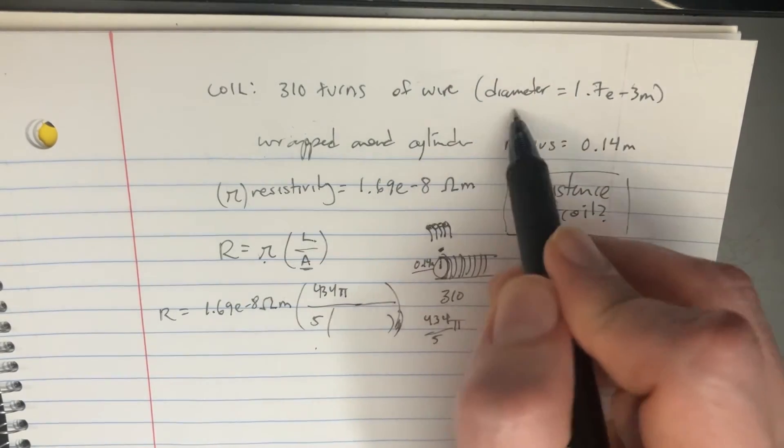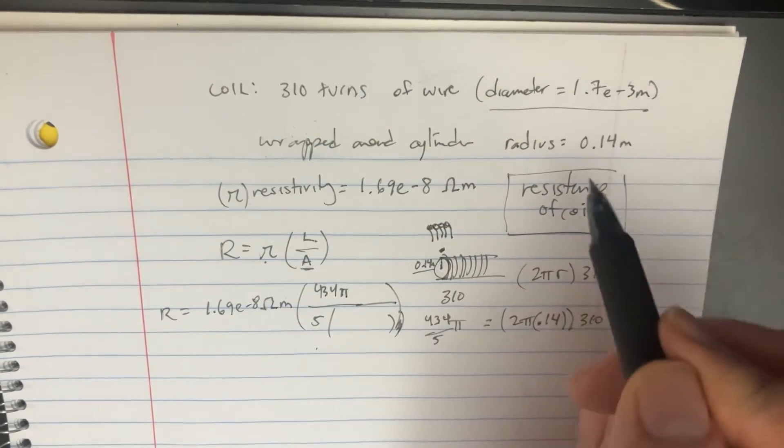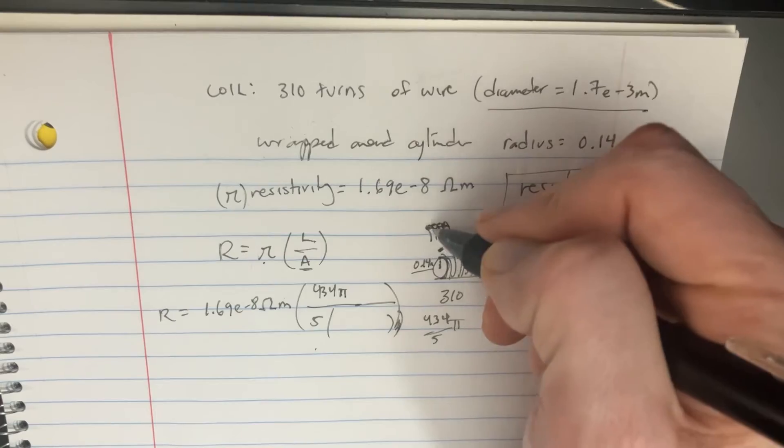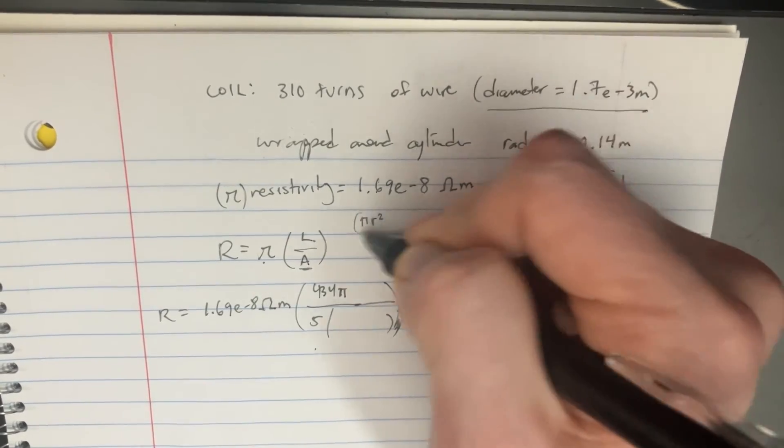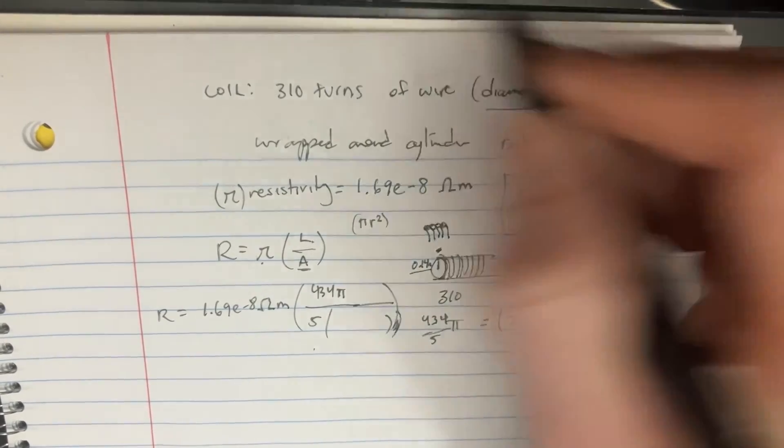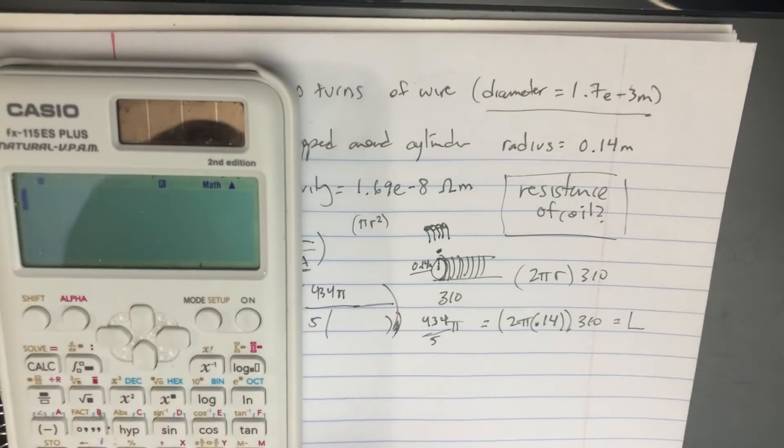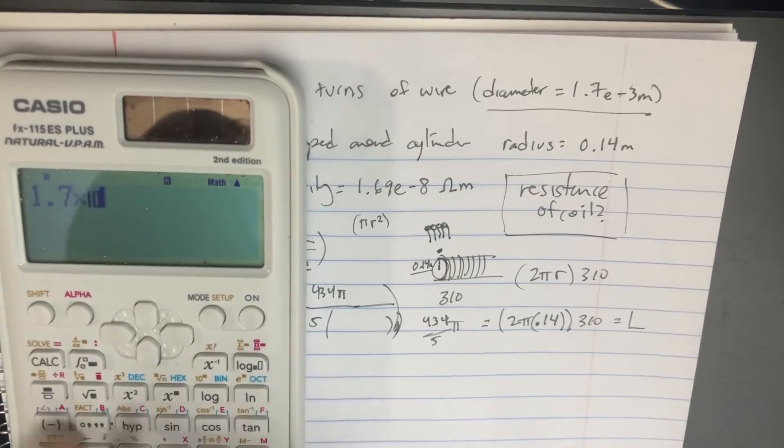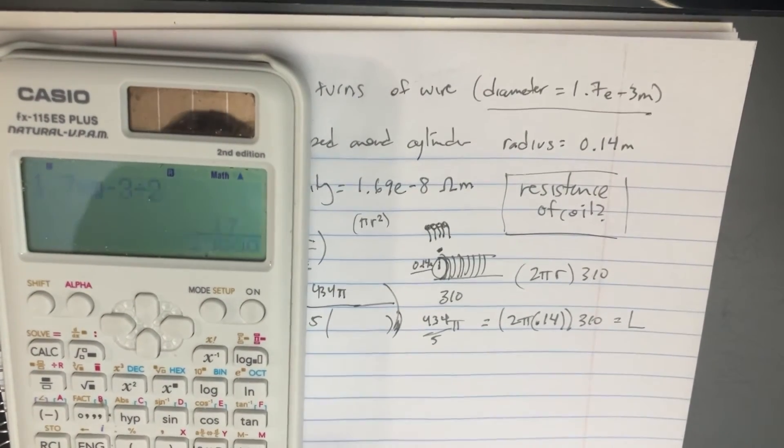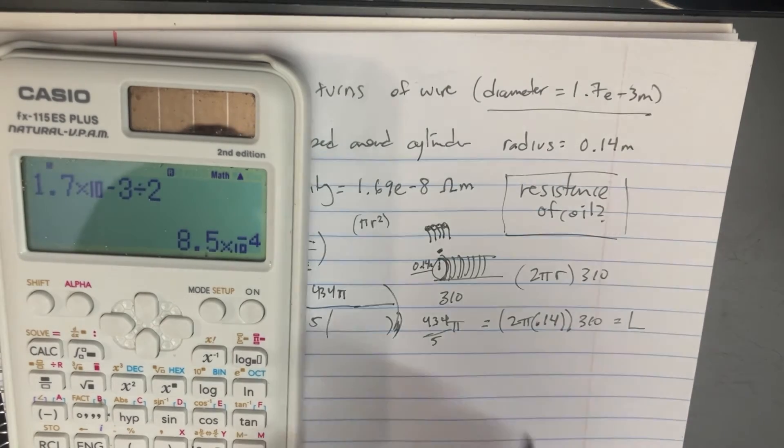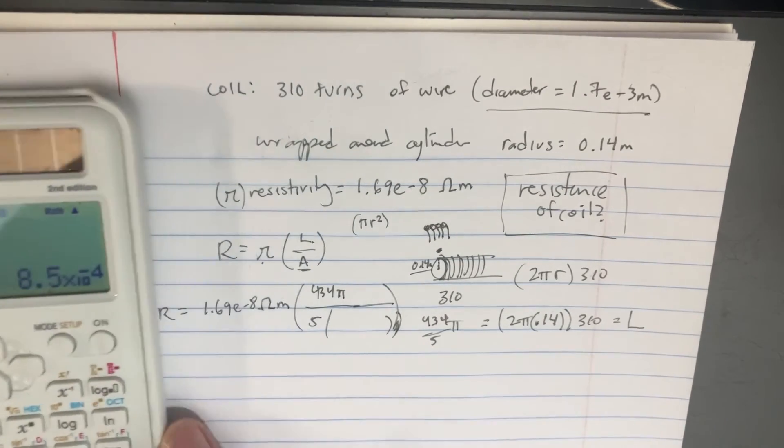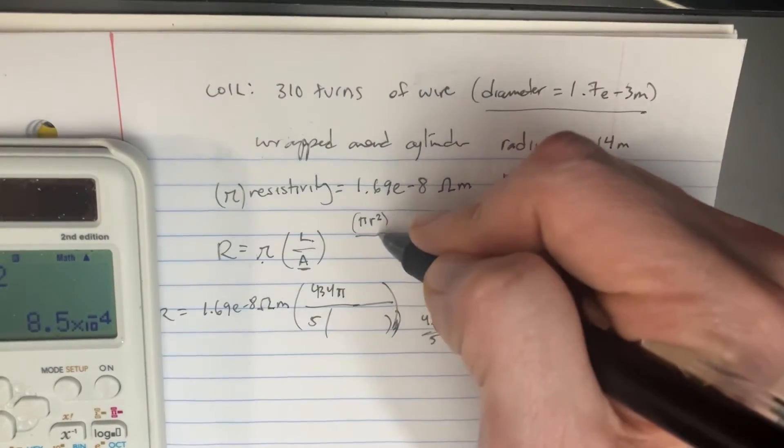So it turns out that the diameter is that. So we know that the area of that circle should be πr². But we only know the diameter, so let's divide that by 2. 0.171 divided by 2. And there we go, we get that.